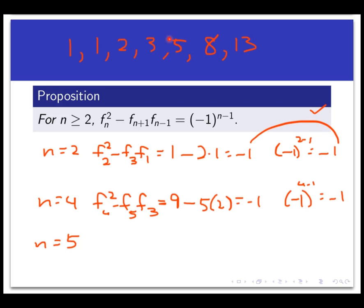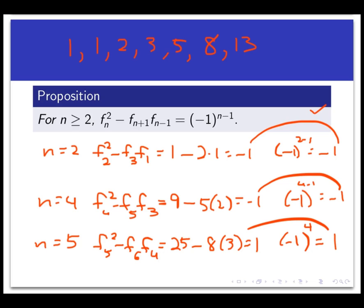Let's do one where it's an odd-numbered subscript, n equals 5. That's right here in the list. So what is F5 squared minus F6 times F4 equal to? Well, F5 is 5, and you square that to get 25. F6 is equal to 8. F4 is equal to 3. And so that comes out to be plus 1. And negative 1 to the 5 minus 1 power, that's negative 1 to the fourth. And even power of negative 1 is plus 1. So all these check out here. So we do believe that the proposition is actually true.